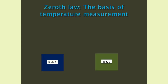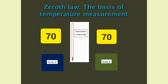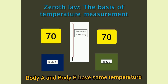Look at the figure. Similar to the previous example, we are considering body A and body B, but body C is replaced by a thermometer. The thermometer measures the temperature of body A — it reads 70 degree Celsius. And then it measures the temperature of body B — it again reads 70 degree Celsius. Which means body A and body B have the same temperature, even if they are not in contact. And so we can say zeroth law serves as the basis of temperature measurement.